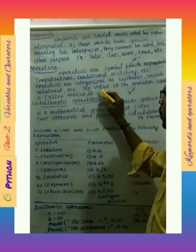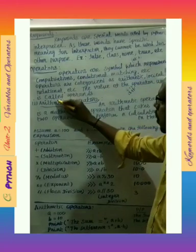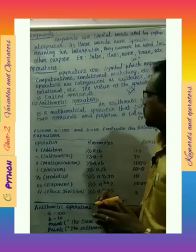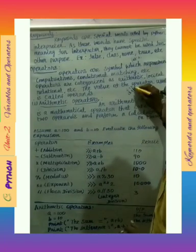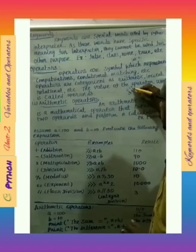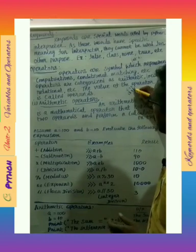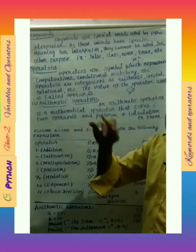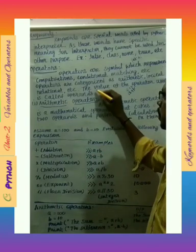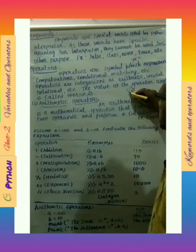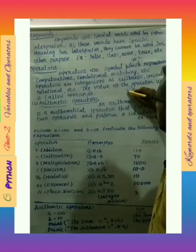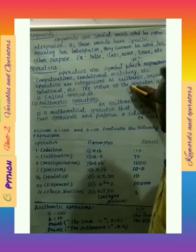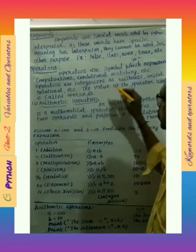The values that an operator uses are called operands. For example, in the expression 'a plus b', if a is assigned the value five and b is assigned six, then a and b are the variables — also called operands. The operator here is plus, and a and b are the operands.